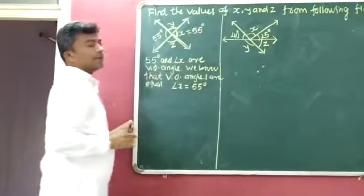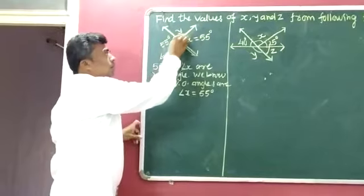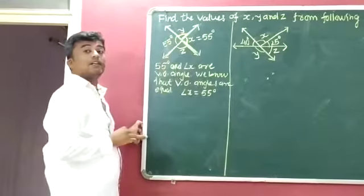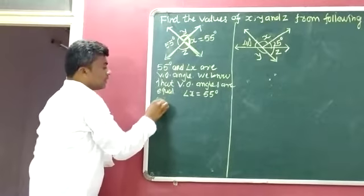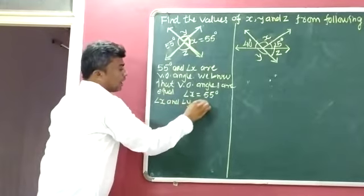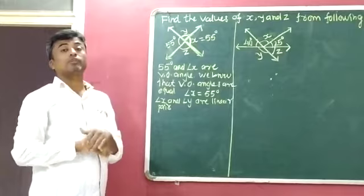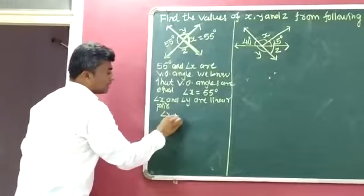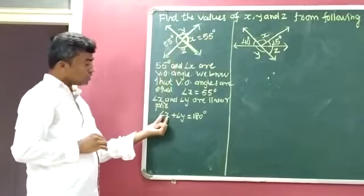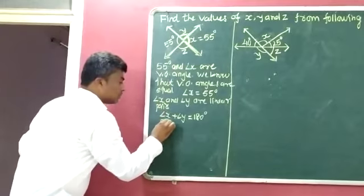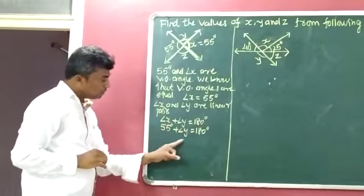So X is equal to 55 degrees — we have identified that. Now in this figure, angle X and angle Y both are a linear pair, because they have a common arm and their non-common arms are exactly opposite to each other, forming exactly a half circle. So angle X plus angle Y is equal to 180 degrees. Now the value of X is 55 degrees, so instead of X I will write 55 degrees. So 55 degrees plus angle Y is equal to 180 degrees.